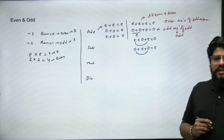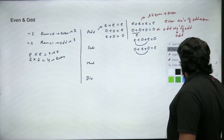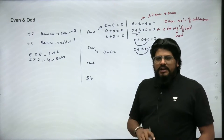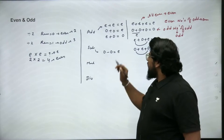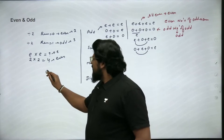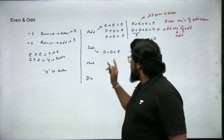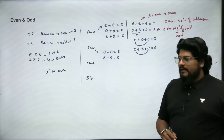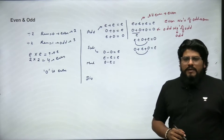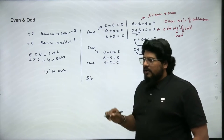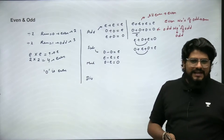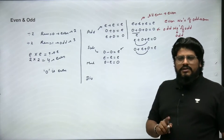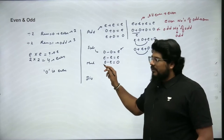Now let's move on to subtraction. Odd minus odd: subtracting one odd number from another gives an even result. Check: 1 − 1 = 0, and zero is even. Even minus even is also even. Odd minus even: 1 − 2 = −1, which is odd. Even minus odd: 2 − 1 = 1, which is also odd. So in subtraction, subtracting two odd numbers gives even; two even numbers also gives even; the result is odd only when subtracting an even and an odd.